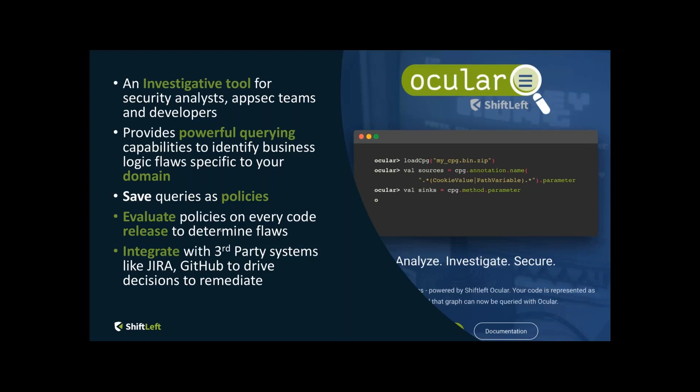You would also like such a system to integrate with third-party systems like Jira and GitHub, where engineers, developers, and AppSec teams spend most of their time. Ocular provides the facility to integrate into these systems within the scope of your interaction and investigation, or when you run it in an autonomous mode as well.